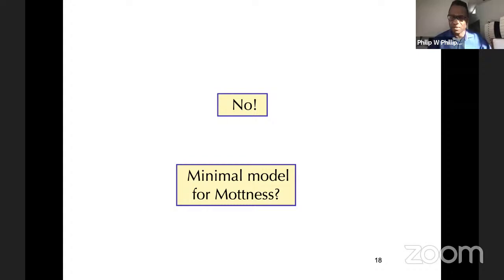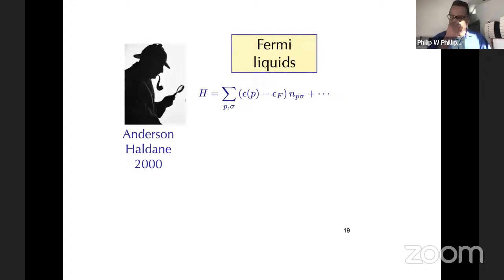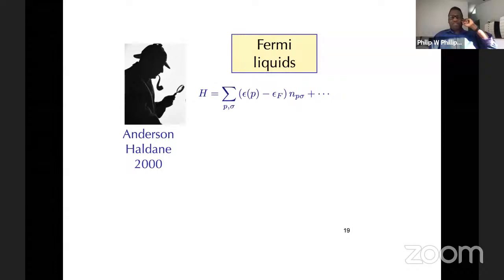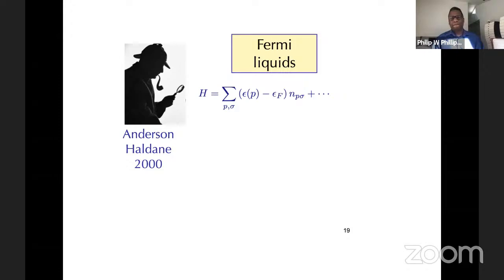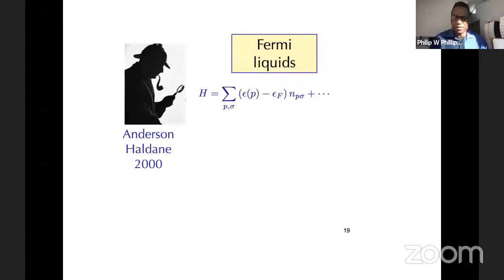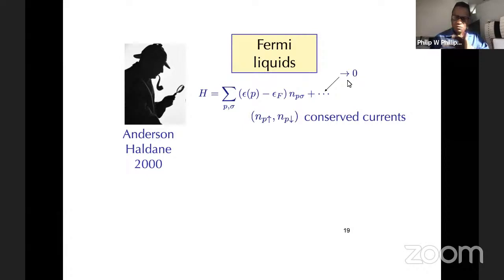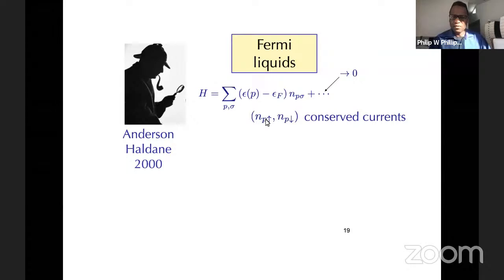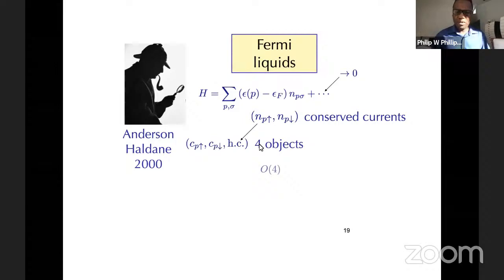To do that, I want to take a closer look at what we mean by a Fermi liquid, through the eyes of an extremely unknown paper by Anderson and Haldane from 2000. It's an attempt to understand Fermi liquids from group theory. A Fermi liquid is a state of matter in which anything you add here renormalizes to zero. The conserved currents are n_{k↑} and n_{k↓}. There are four objects which go into these currents, and correctly noted, this means the symmetry group is O(4).